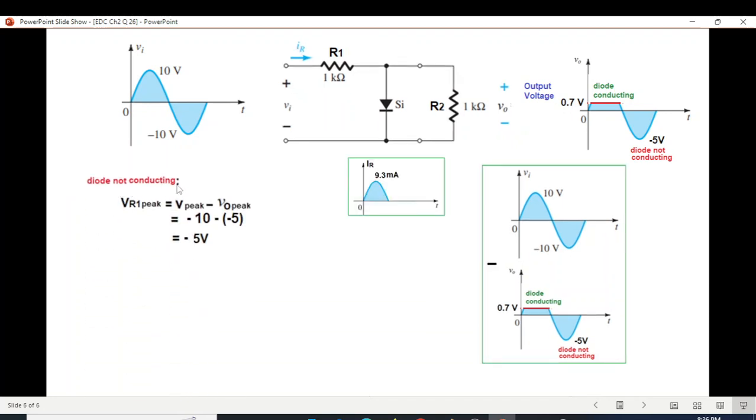Diode not conducting. So V peak minus again, same formula. Now here we are minus 10 minus minus 5. Minus 10 minus minus 5, it will be minus 5. And same way current we can calculate. Current will be now minus 5 milliampere. So this is for the second half. Minus 5 milliampere.